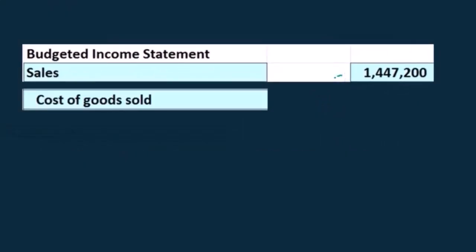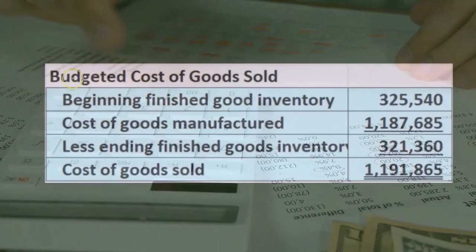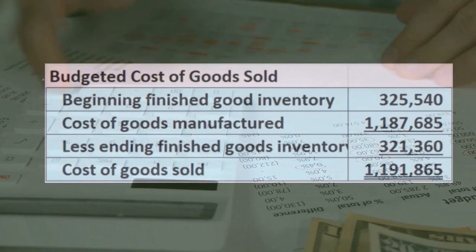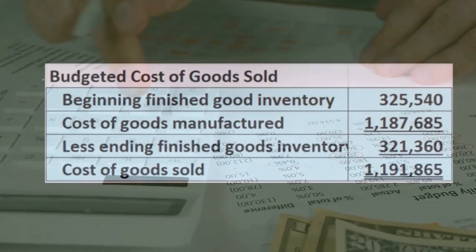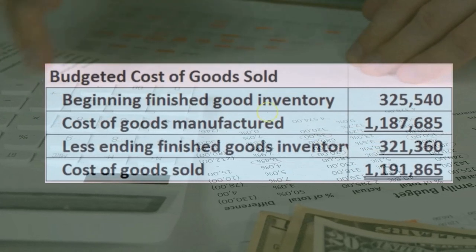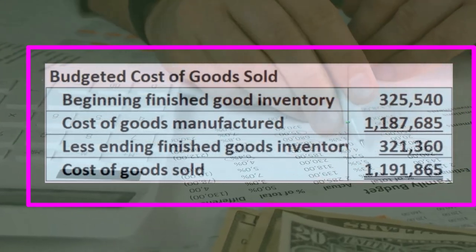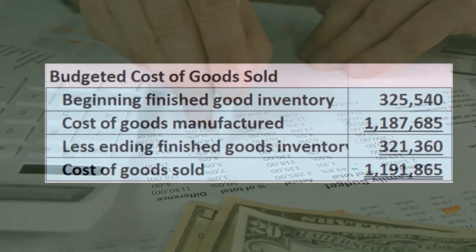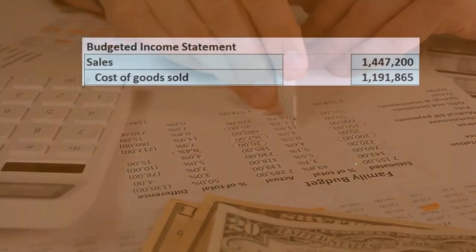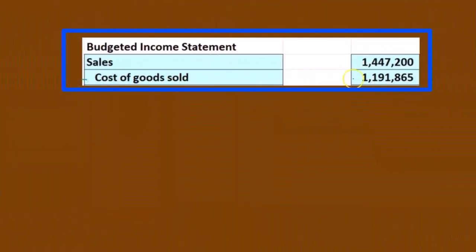Then we have the cost of goods sold calculation, which of course we have calculated, and we did that in the budgeted cost of goods sold. That's in the prior recording where we took a look at the cost of goods manufactured. We needed that number in order to create the cost of goods sold calculation, then we can take the cost of goods sold number and plug that into our budgeted income statement.